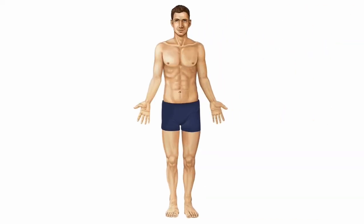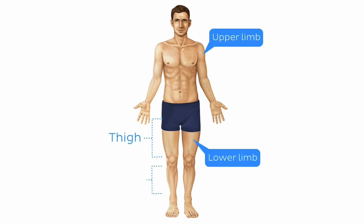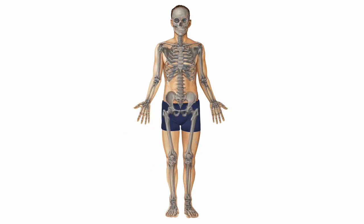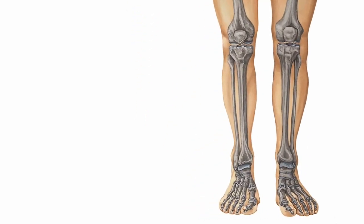Before we begin, I just want to clear up an issue that often arises when transitioning from everyday terms to anatomical terms. As a kid, your arm is your arm and your leg is your leg, but not in anatomy. Instead, your arm or upper limb is divided into the arm and forearm, and your leg or lower limb is divided into the thigh and leg. So when I say we're going to be talking about the bones and soft tissues of the leg, I'm really talking about this region here between the knee and the foot.